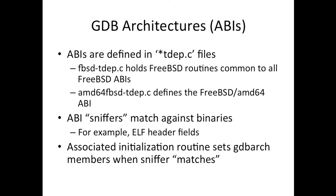When you open a given executable, GDB has a list of ABI sniffers — a linked list of little structures with a probe function that looks at the binary and returns a value indicating how well they match. The best sniffer wins and gets attached to the binary, defining what architecture-specific and OS-specific behavior we'll use. When you have a cross debugger, you have a bunch of different sniffers all compiled in the same binary, and keying off properties of the binary is how we pick which ABI to debug against.